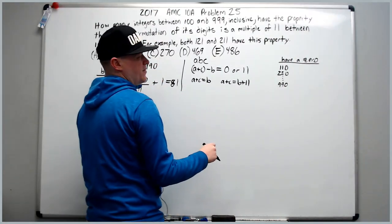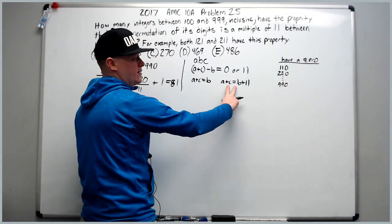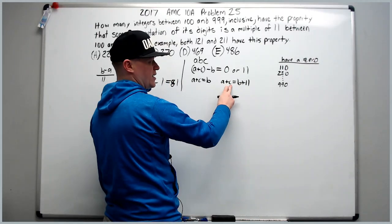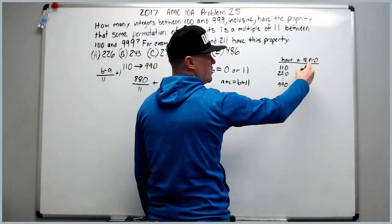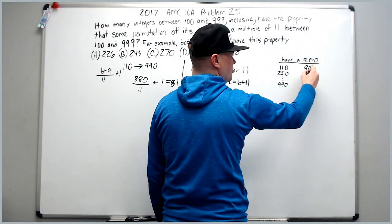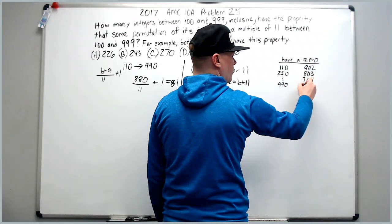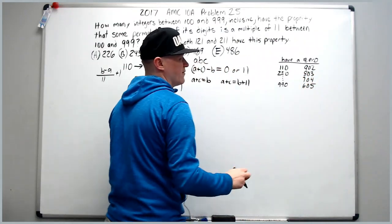this is of the first type where A, which is 9 plus 0 equals 9. The second kind is this one. And we could do where B is now 0, and A plus C will equal 11. That would be 902, 803, 704, and 605.